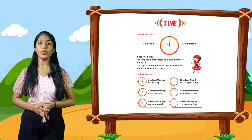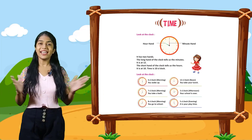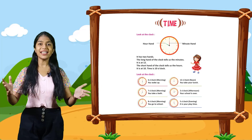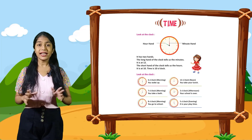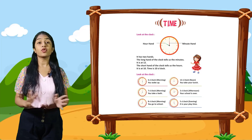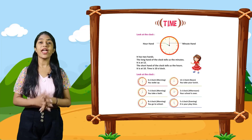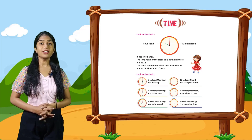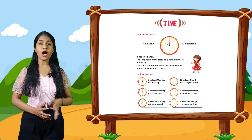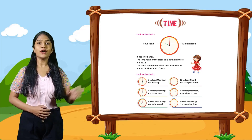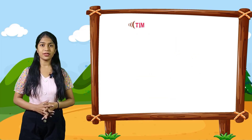So now let's do time. Here is a picture of a clock given to you. This is the minute hand and this is the hour hand. The long hand tells us the minutes — it is at 12. The short hand tells us the hours — it is at 10. So the time is 10 o'clock. Here are daily activity times: 6 o'clock you wake up, 7 o'clock you take a bath, 8 o'clock you go to school, 12 o'clock noon you take your lunch.